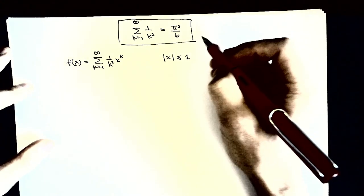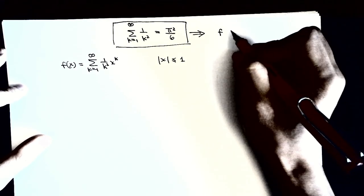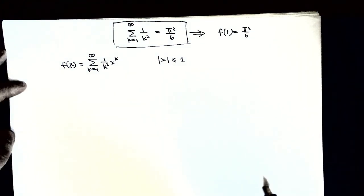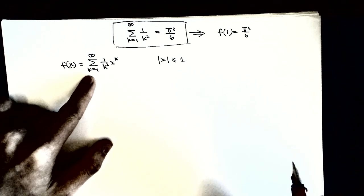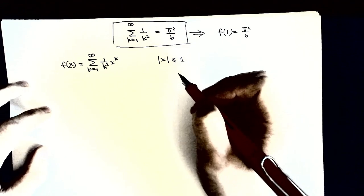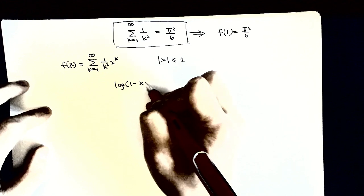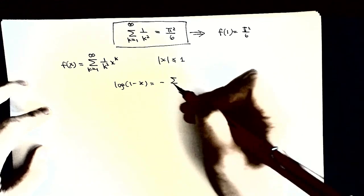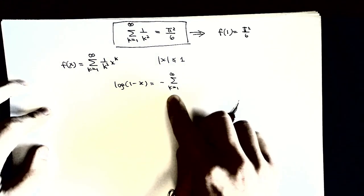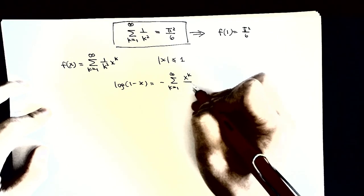So this problem is: we want to show f(1) is actually pi squared over 6. Now, we want to get this function to be calculated. We notice that for log(1 minus x) there is a recurring series representation, which is minus the sum from k equals 1 to infinity of x to the power of k over k.